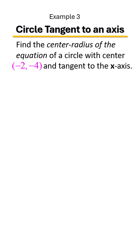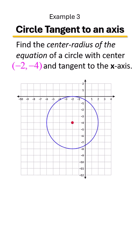You're just going to simply go 4 left, 4 right, 4 up, 4 down after you plot the center. So this is what your circle is going to look like.